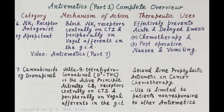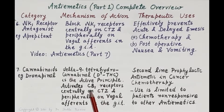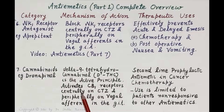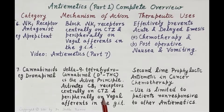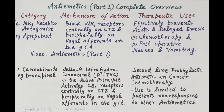The cannabinoids — for example, dronabinol — have delta-9-tetrahydrocannabinol as the active principle. It activates CB1 cannabinoid receptors centrally on the chemoreceptor trigger zone and peripherally stimulates CB1 receptors on vagal afferents in the GIT. These drugs are second-line prophylactic antiemetics in cancer chemotherapy, limited to patients not responding to other antiemetics.